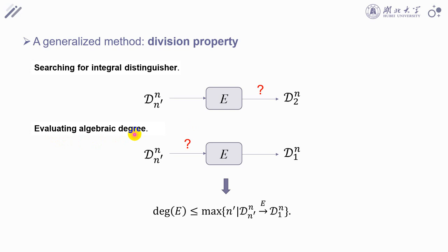When estimating the algebraic degree, it's a reverse process. We need to fix the output DP to one and maximize the input DP that can propagate to one. Then the maximum of the input DP can be regarded as an upper bound on the algebraic degree. Note that this DP is bit-based DP. For the sake of convenience, we call it the BDP method.